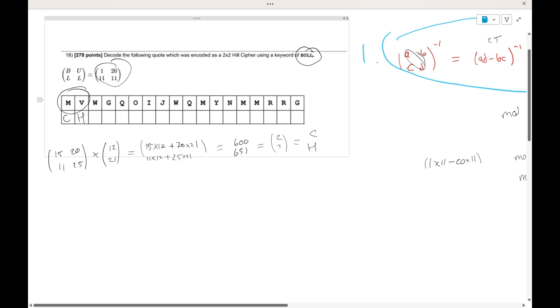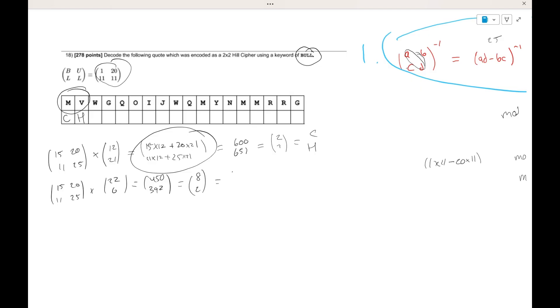Now we're going to do this for every single pair of 2. So the next one is going to be 15, 20, 11, 25 times W and G, which are equal to 22 and 6. If we do this entire multiplication step, you're going to get 450 over 392. And if we do mod 26, you're going to get 8 over 2, which is just going to be I and C. Let's keep going for Q and O. You're going to get 15, 20, 11, 25 times Q and O, which is 16 and 14. If we multiply it out, you get 520 and 526, which is 0 and 6, which is A and G in mod 26.